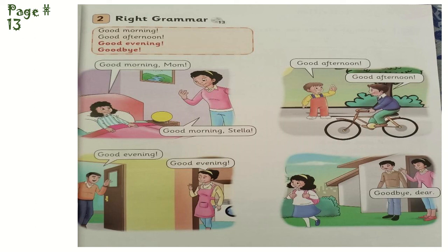In the evening, he's coming home from the office and says 'Good evening,' and his wife replies 'Good evening.' When you are going somewhere — for example, the kid is going to school — her parents greet her: 'Goodbye, dear.' This is the way you greet others.